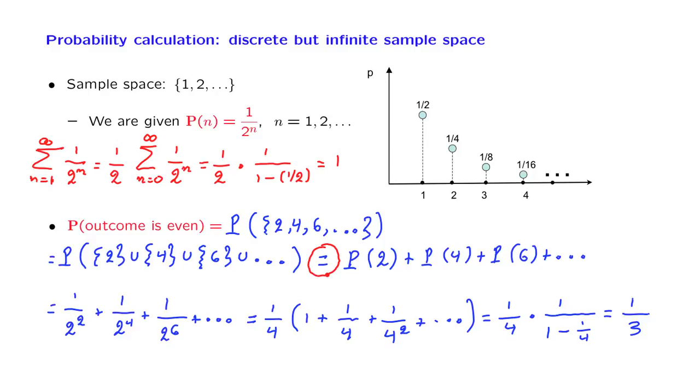So this step here is not really allowed by what we have in our hands. On the other hand, we would like our theory to allow this kind of calculation. The way out of this dilemma is to introduce an additional axiom that will indeed allow this kind of calculation.